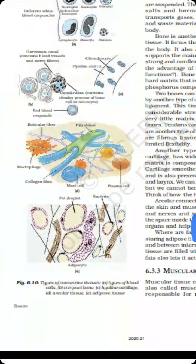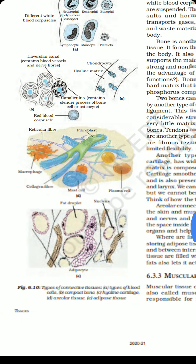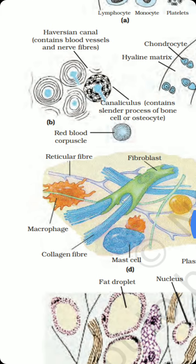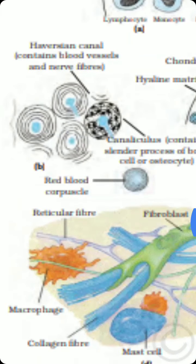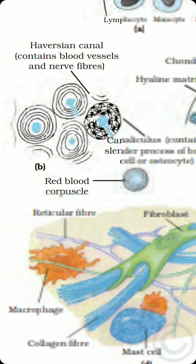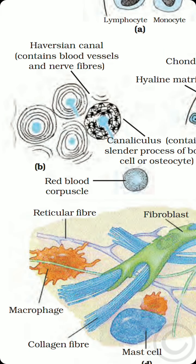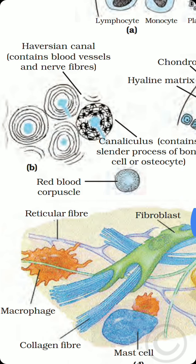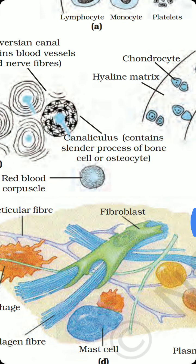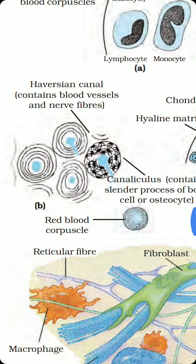Adipose tissue acts as an insulator for the body and also provides chubbiness to the body of the organism. In the figure, different kinds of tissues are described — in panel B you can see bone tissue with the Haversian canal, which contains blood vessels and nerve fibers.